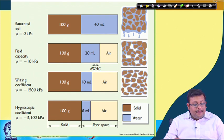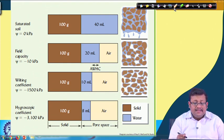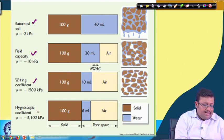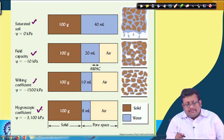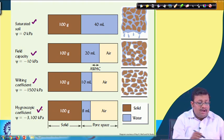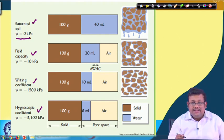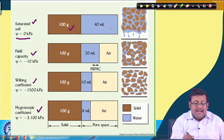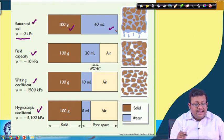There are four varying degrees of soil wetness. The first is the saturated condition, second is field capacity, third is wilting coefficient (permanent wilting point), and finally the hygroscopic coefficient. In the saturated condition the total water potential is 0 kPa and all macropores and micropores are filled with water. Assuming soil weight of 100 grams, 40 ml of water is present filling all pores — this is the saturated condition.